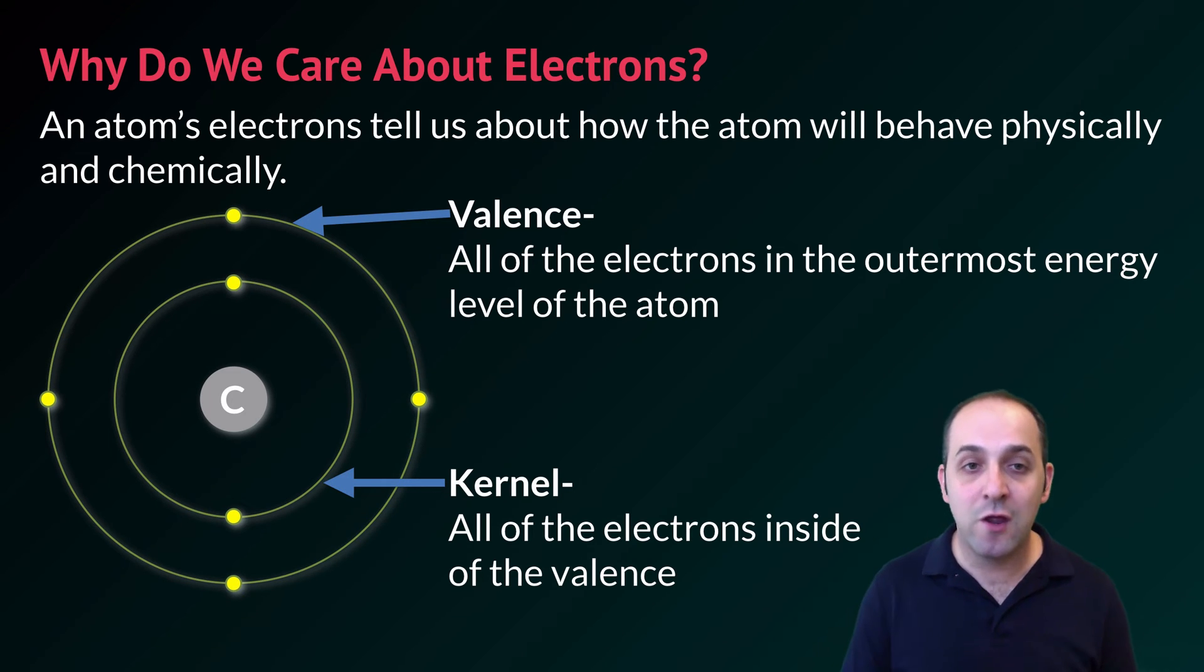Those will all be part of what's called the kernel. All of the electrons inside of the valence. Between the valence and the kernel we have all of the atom's electrons.